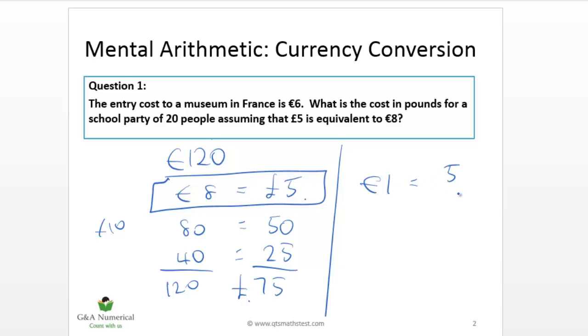Well 1 euro would be 5 eighths of a pound. And all you're doing there is you're using this equation, and you're dividing both sides of it by 8. So 8 divided by 8 gives you the pound, 5 divided by 8 is what we've just written there. So 1 euro equals 5 eighths of a pound.